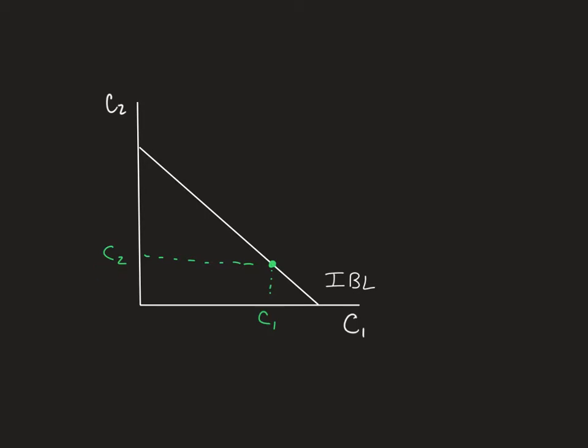Now, what if I want to consume more in period one? So I want to increase my consumption in period one. Well, what am I giving up? I'm giving up some consumption in period two. What am I going to have to do? I'm going to have to borrow from my future consumption. And if we're borrowing, how am I going to get more money to borrow? I'm going to have to pay some sort of interest. So you can see the interest rate is going to play a big role in moving from one point to the other.